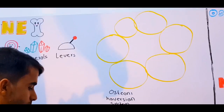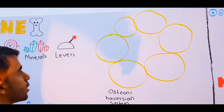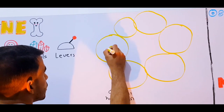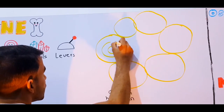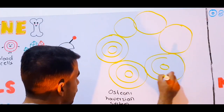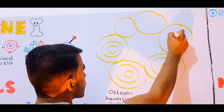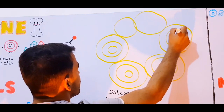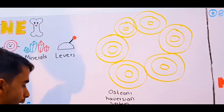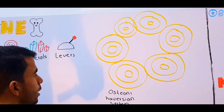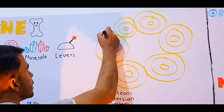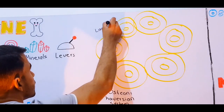Each of these osteons is made out of concentric layers. These layers are bone matrix and they are called lamellas.